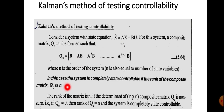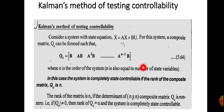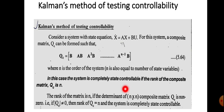The rank of the matrix is n if the determinant of the n×n composite matrix Qc is non-zero. If this determinant is non-zero, then the rank equals n. If it equals zero, then the rank is not n. When the rank equals n, we can say that the system is completely state controllable.